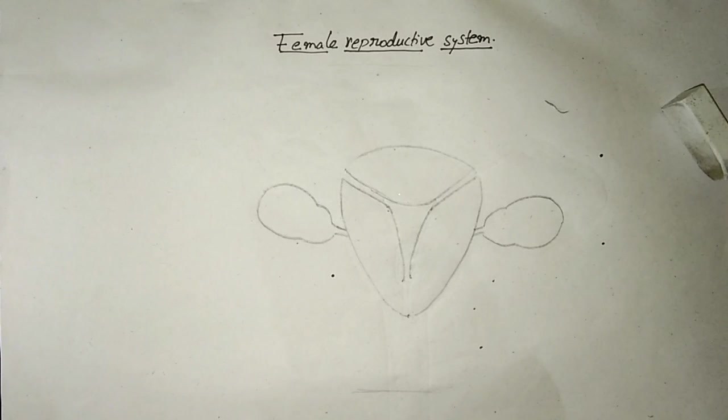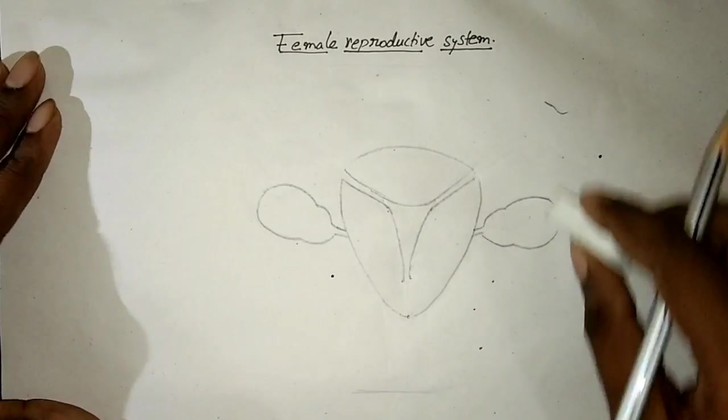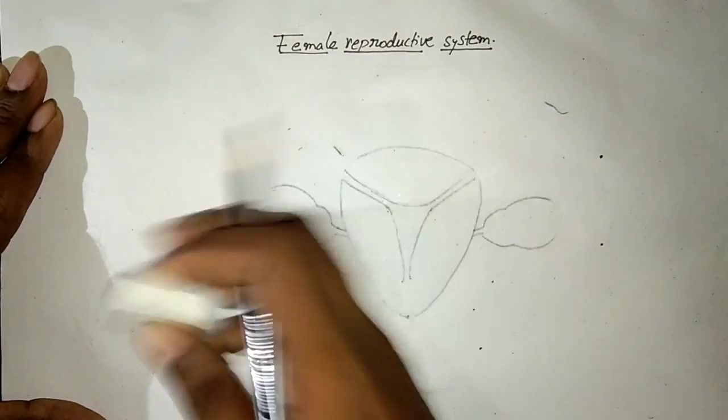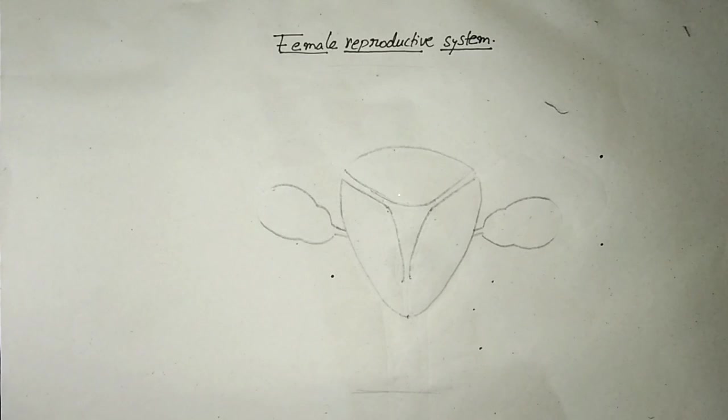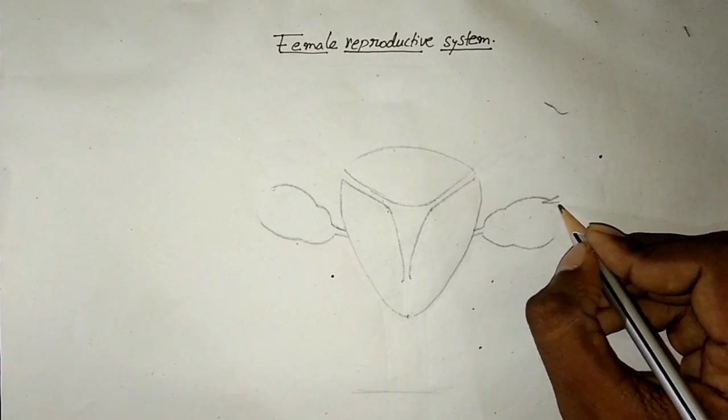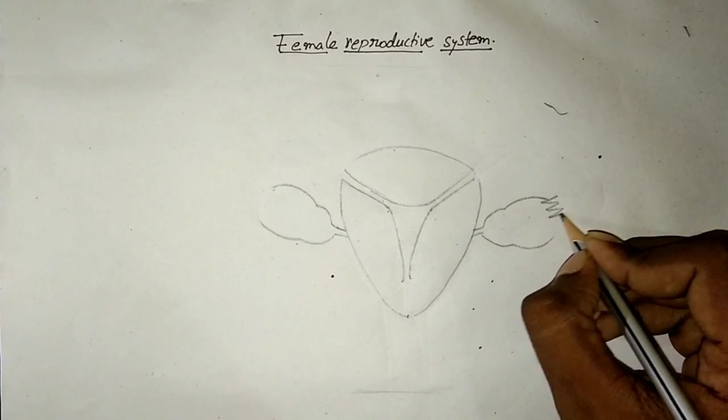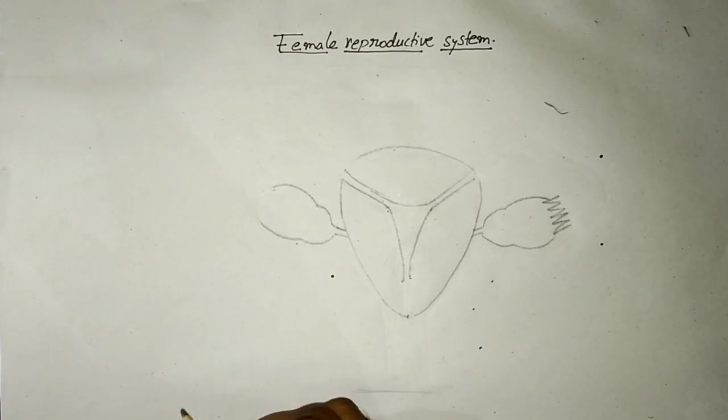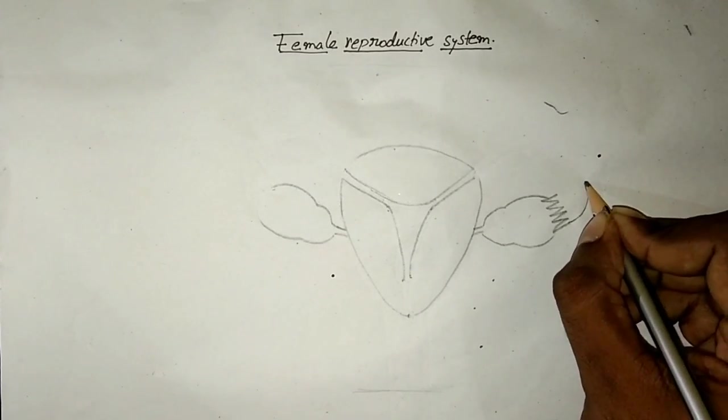Now I am going to erase a portion of the two ovaries on both sides. Now I am going to draw the finger-like projections of the infundibulum, which is called fimbriae like this, and I am going to draw the fallopian tube like this.